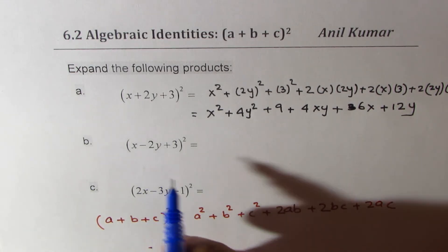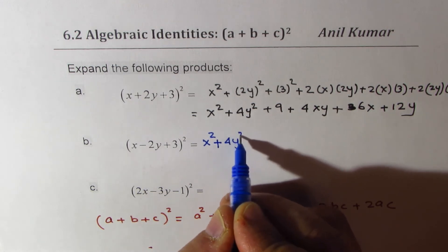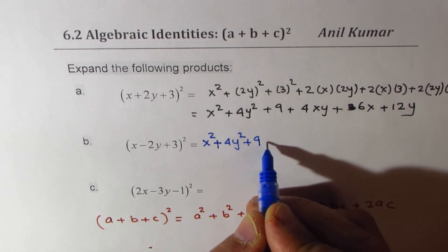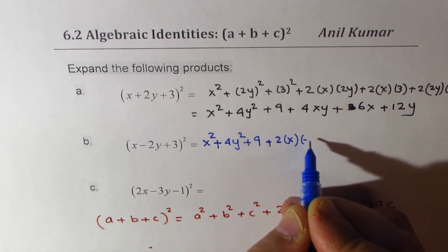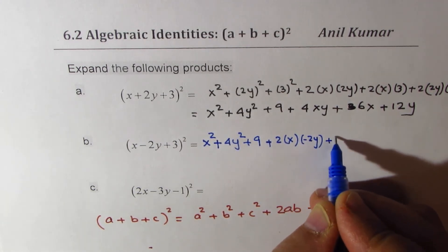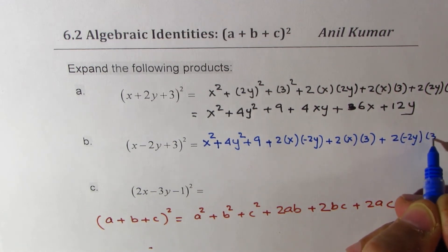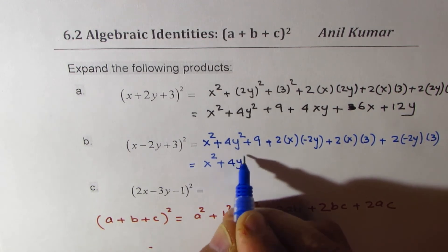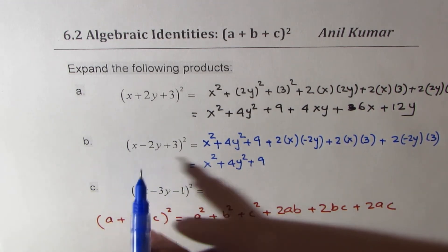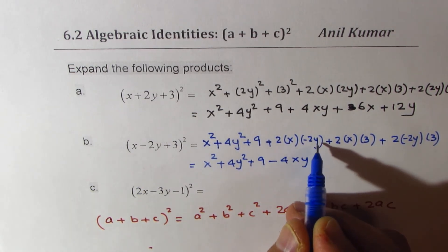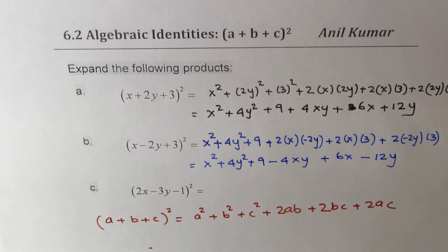Next, for (x−2y+3)²: the square terms are all positive — x² + 4y² + 9. Now for the cross terms: 2 times x times (−2y) gives −4xy, and 2 times x times 3 gives +6x, and 2 times (−2y) times 3 gives −12y. So wherever the y-term appears, the sign is negative.